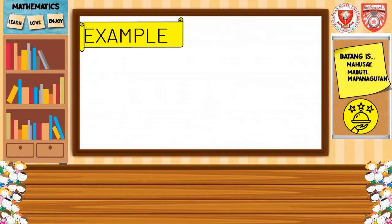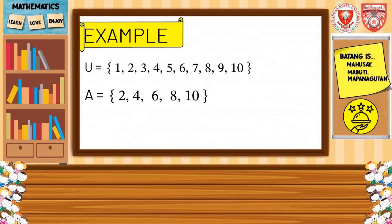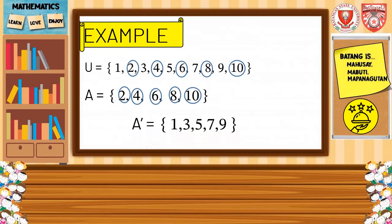Let us have an example. The universal set is {1, 2, 3, 4, 5, 6, 7, 8, 9, 10}. Set A has the elements 2, 4, 6, 8, and 10. We're going to find the complement of A. Let us encircle all the elements in set A which are in the universal set — we have 2, 4, 6, 8, and 10. Then the remaining elements in the universal set give us the complement of A. So the complement of A is equal to {1, 3, 5, 7, 9}.